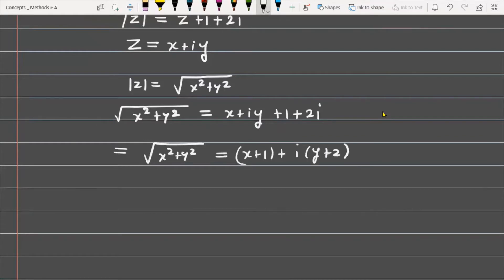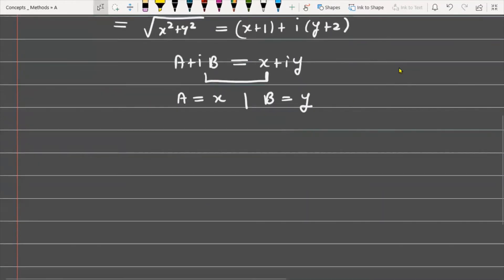As you know, when two complex numbers are equal—suppose a complex number is A + iB and a second complex number is x + iy—this happens only when the real part equals the real part and the imaginary part equals the imaginary part.